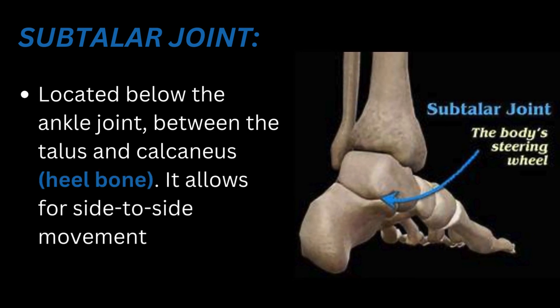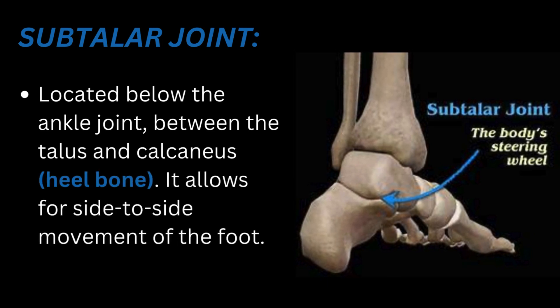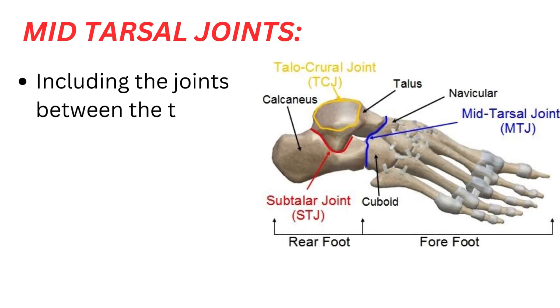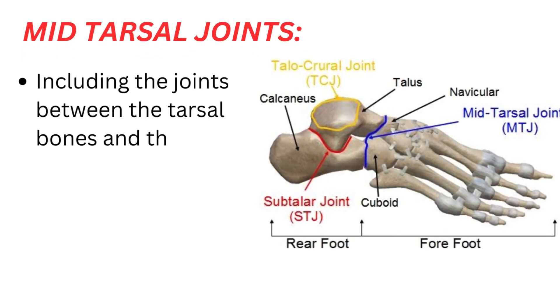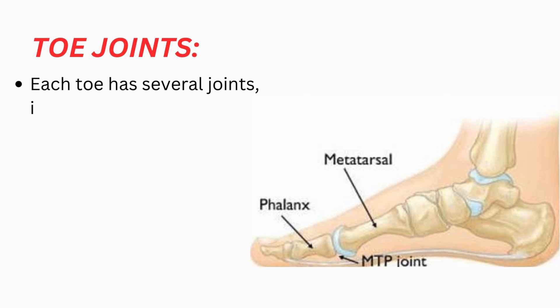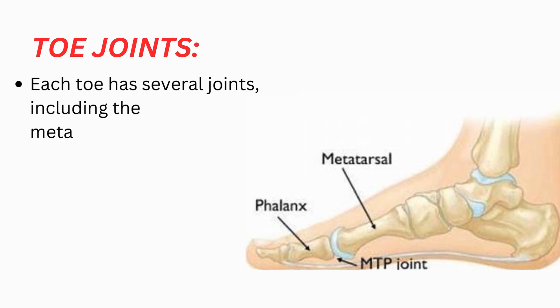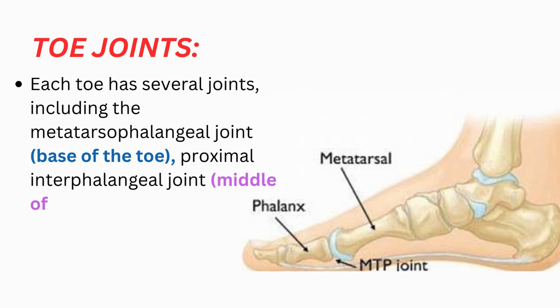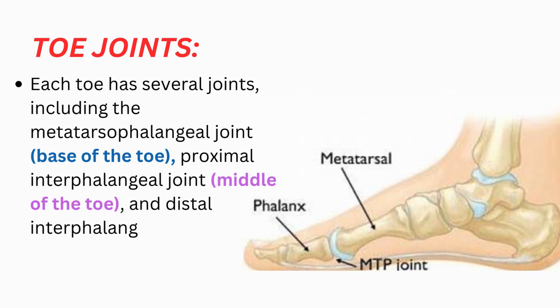The subtalar joint allows for side-to-side movement of the foot. Midtarsal joints include the joints between the tarsal bones and the joints between the metatarsal bones. Toe joints: each toe has several joints, including the metatarsophalangeal joint (base of the toe), proximal interphalangeal joint (middle of the toe), and distal interphalangeal joint (closest to the tip of the toe).